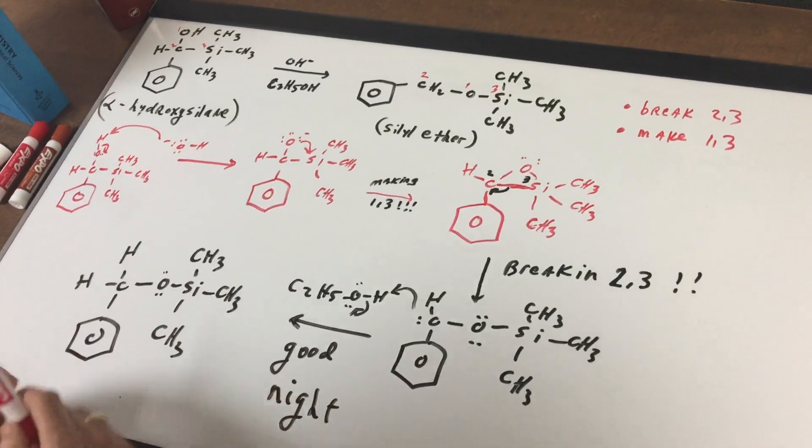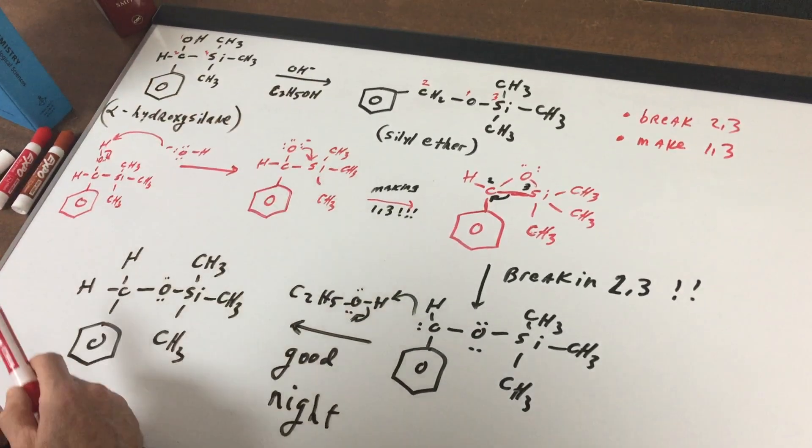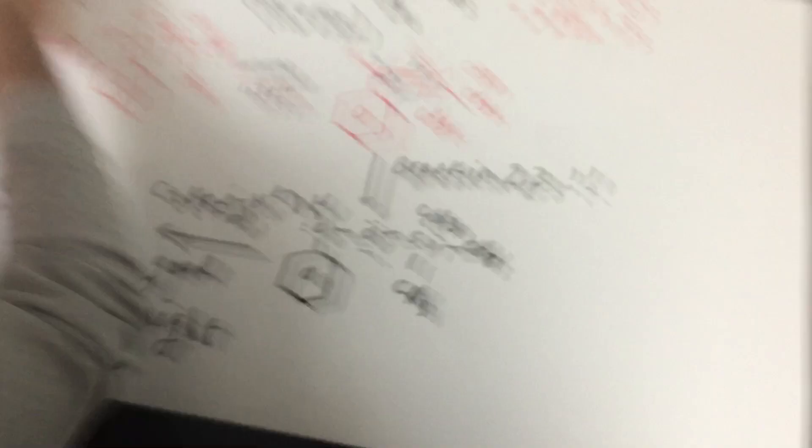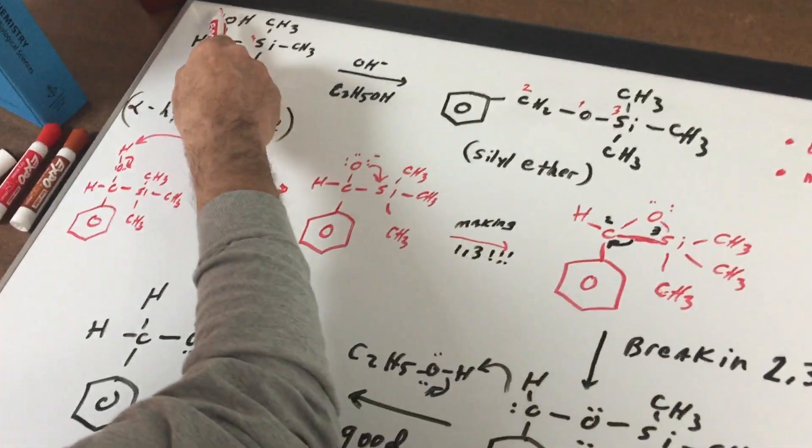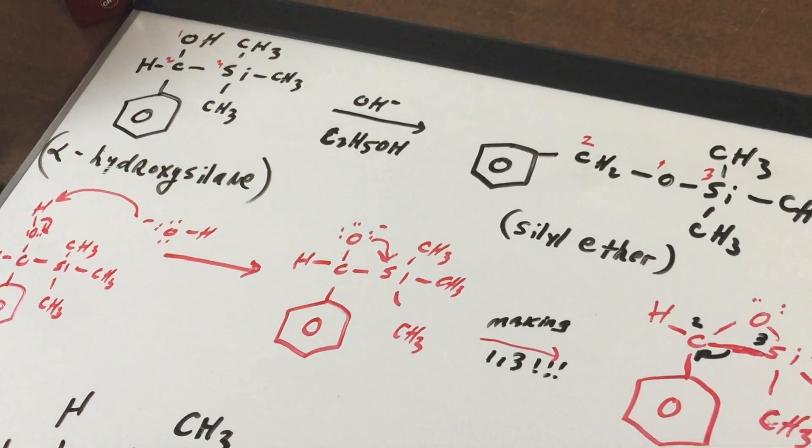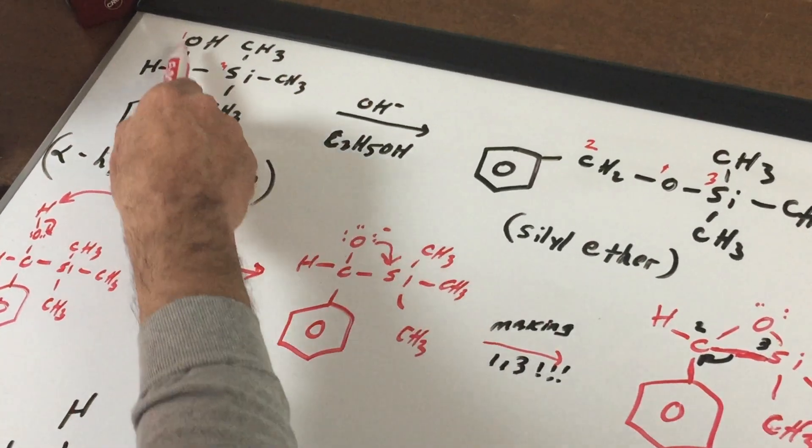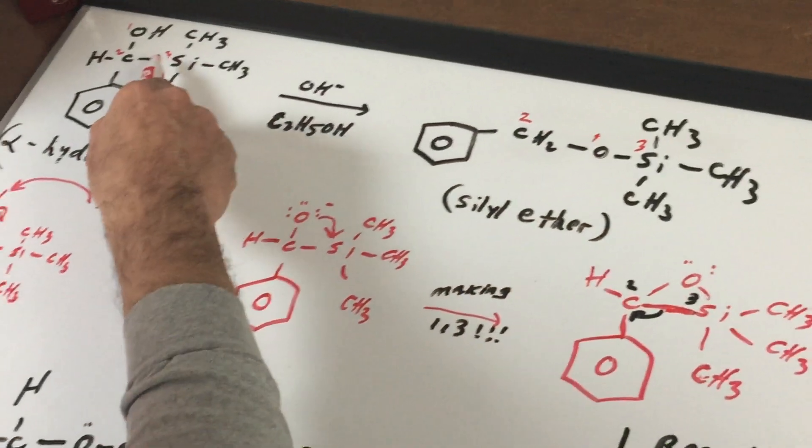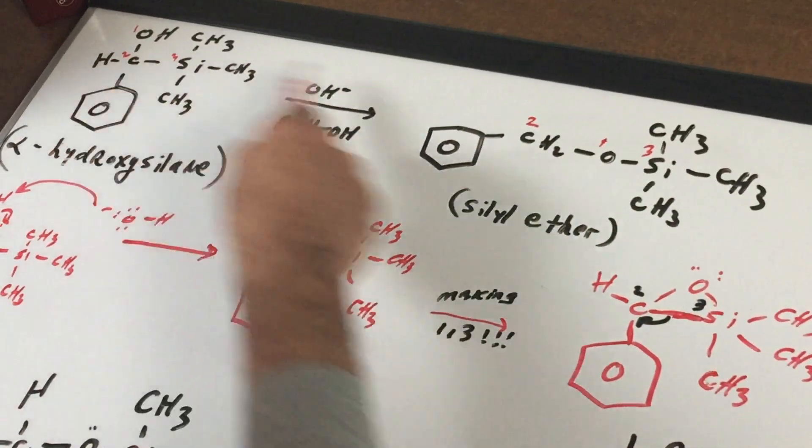What I first do on this problem is I'm going to number the atoms. This is number one, this is number two, and this is number three, just so I can keep track of things. Number one is here, silicon is here, and the carbon is here.